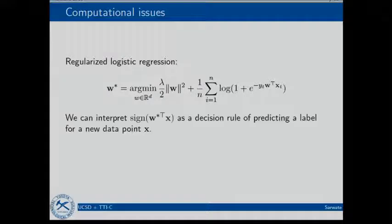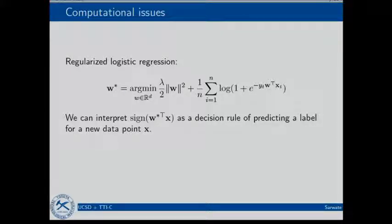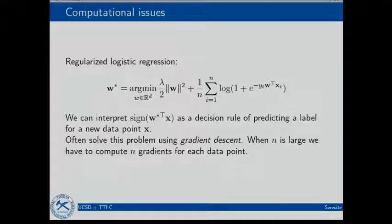For those who are not familiar — there are some non-computer scientists, engineering types here — basically what we're trying to find is a hyperplane. W defines a hyperplane which separates my data into two classes, plus one and minus one.